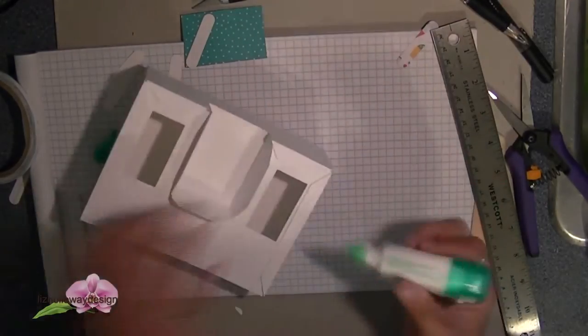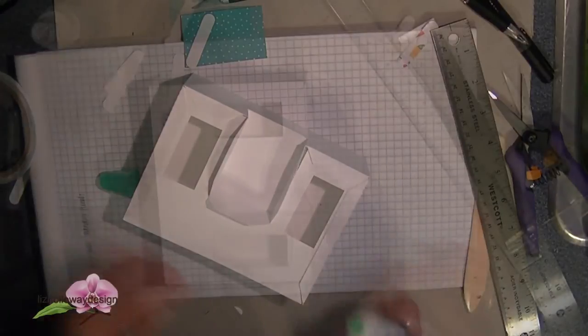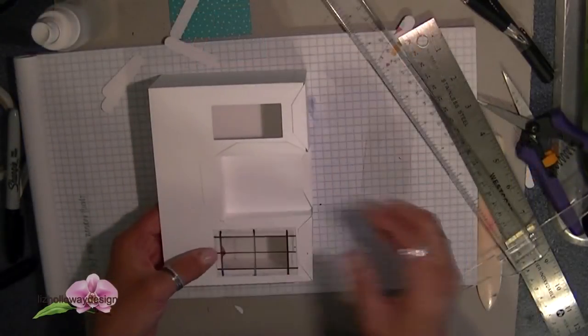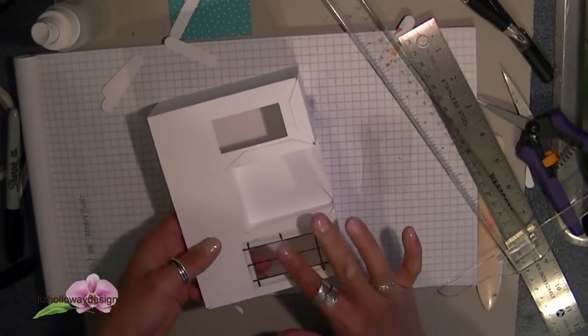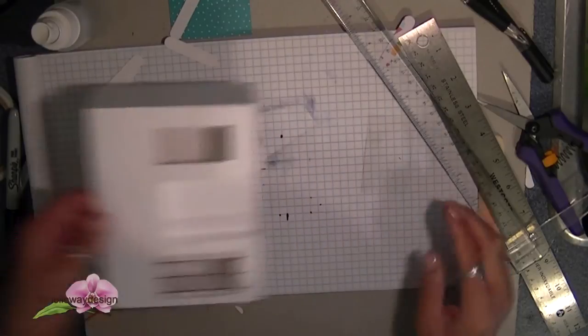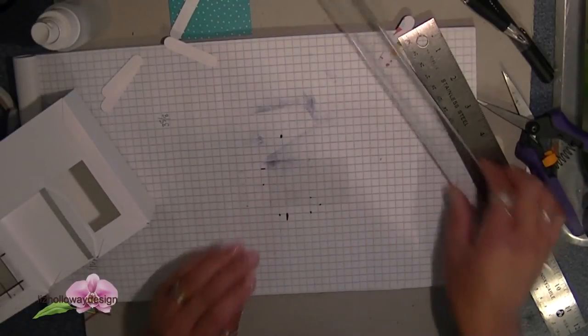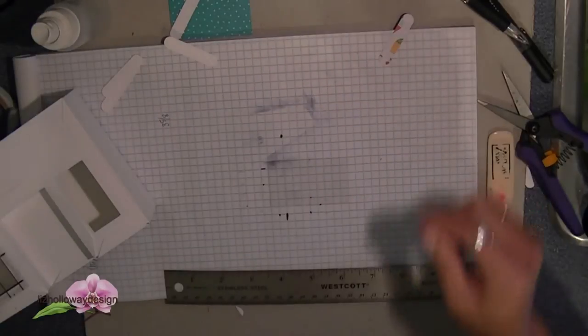Now I have went ahead and prepared my acetate window and I am adding window panes using a fine black sharpie marker and then attaching the window down.